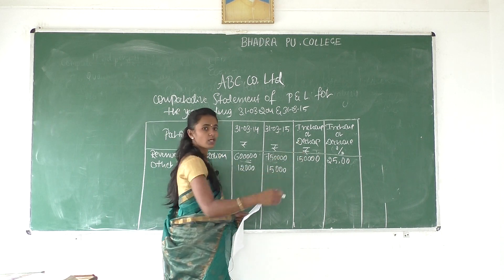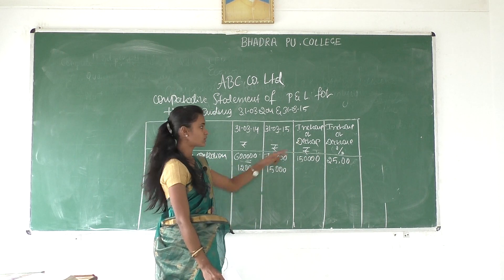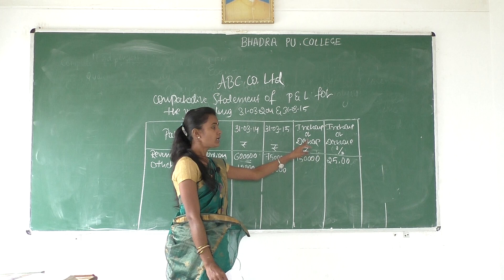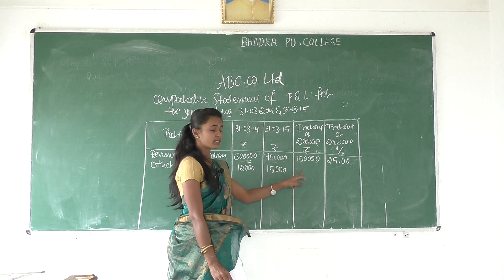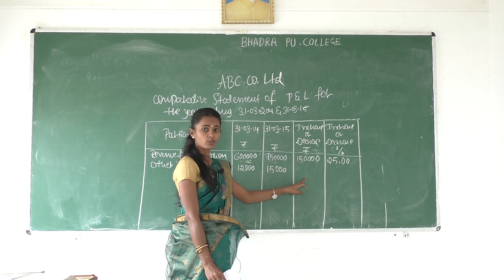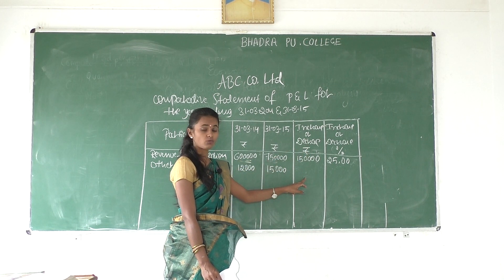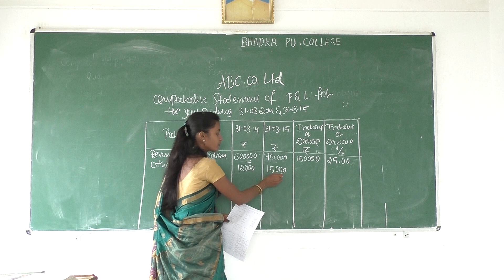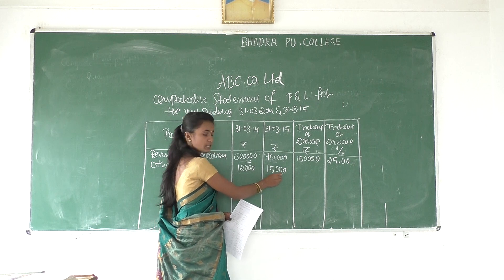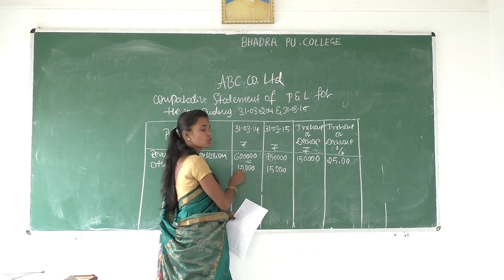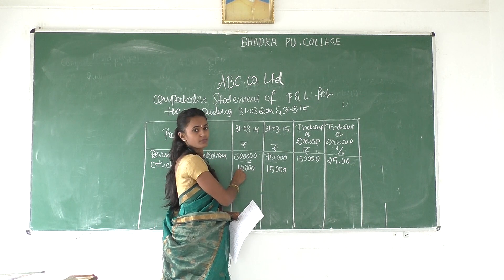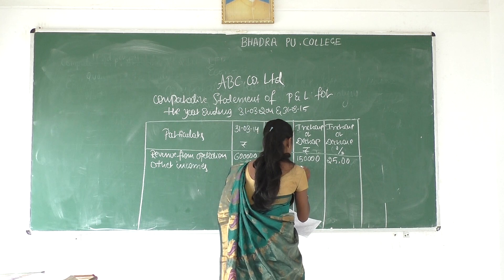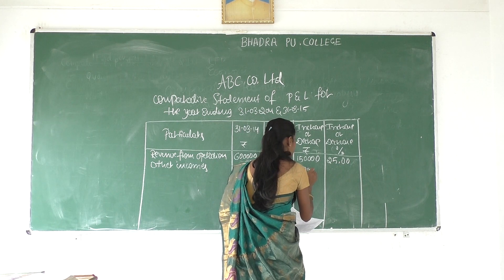We have to find out increase or decrease in rupees. Again, increase or decrease in rupees. What we have to do: 15,000 minus 12,000 — how much? It's 3,000 rupees.